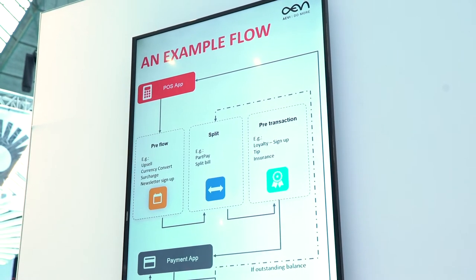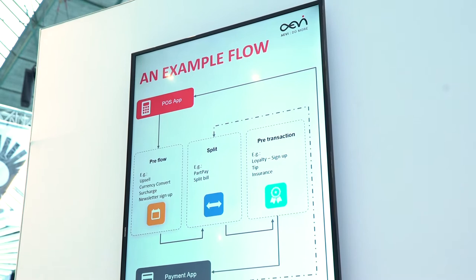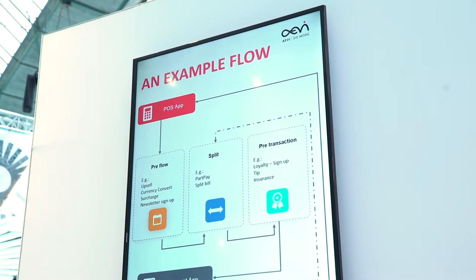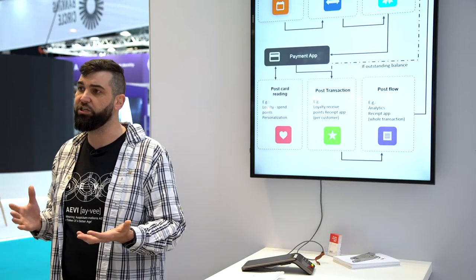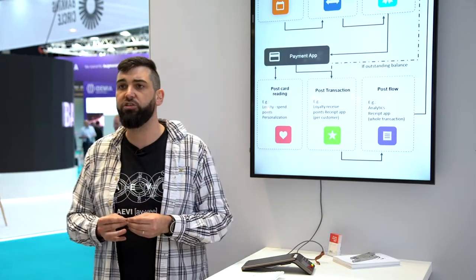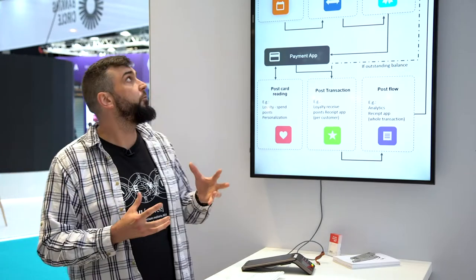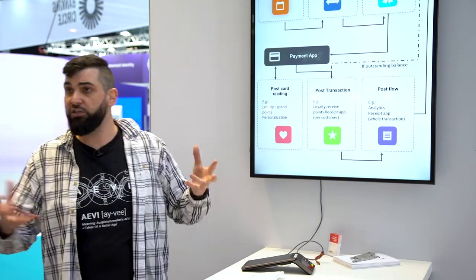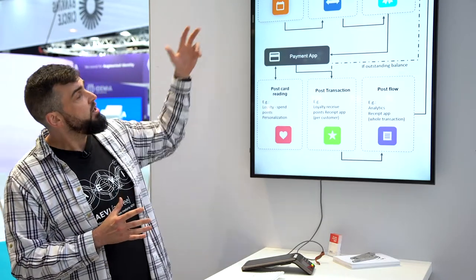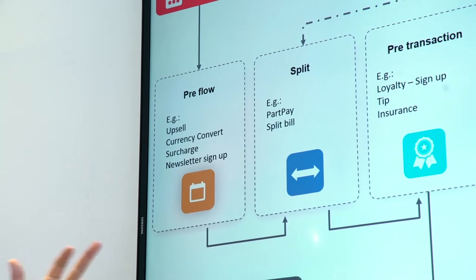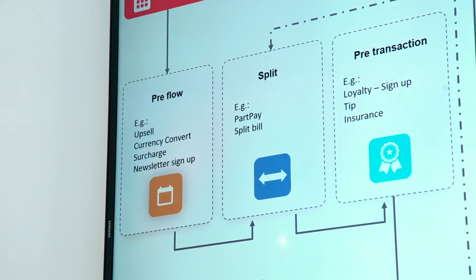It's called AppFlow, and what we mean by a flow is: when that transaction is started, we can go through any number of stages and launch new applications in each of those stages. Here's an example of a sale flow. When a POS app or any sort of application starts the flow — and it can be any application that starts the flow — instead of going straight to the payment app to ask for payment, we go through three stages: pre-flow, split, and pre-transaction.